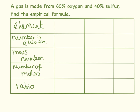Our question is: a gas is made from 60% oxygen and 40% sulfur — find the empirical formula. Set out a table with the element, the number in the question, the mass number, the number of moles, and the ratio. So the elements are oxygen and sulfur, and the numbers in the question are 60 and 40.